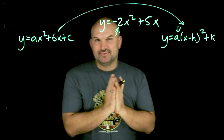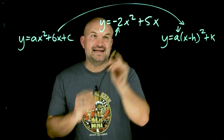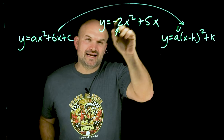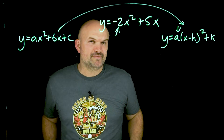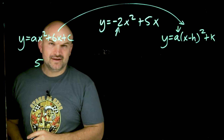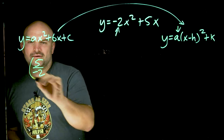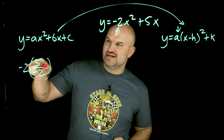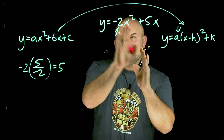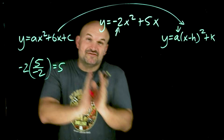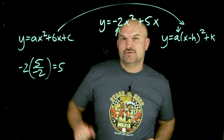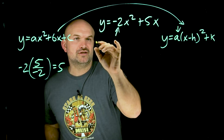To get the negative 2 outside, we simply need to factor out a negative 2 from negative 2x squared as well as from the 5x. Factoring a negative 2 from 5 is more confusing — if you factor out a negative 2, you rewrite it as negative 5 divided by negative 2, which still equals 5. Since negative 2 doesn't evenly divide into 5, the result is 5 over negative 2, giving us negative 2 times the quantity x squared minus 5 halves x.